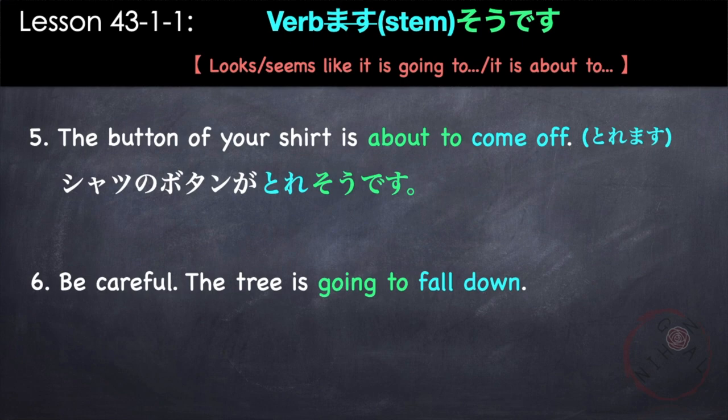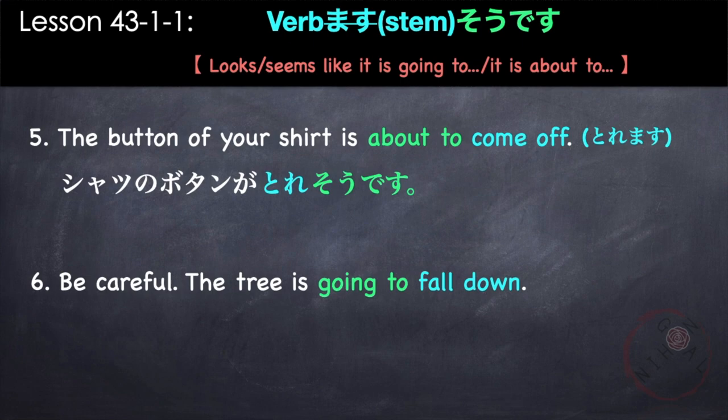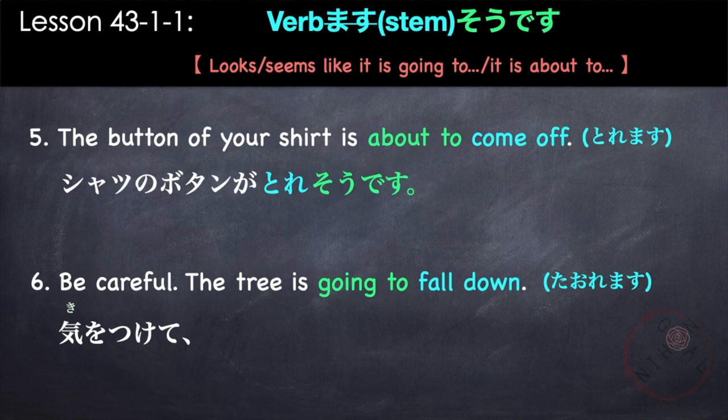'Be careful, the tree is going to fall down.' The verb is to fall down, taoreimas — this is an intransitive verb. Kiyotsukete, ki ga taore so desu. Kiyotsukete, ki ga taore so desu.